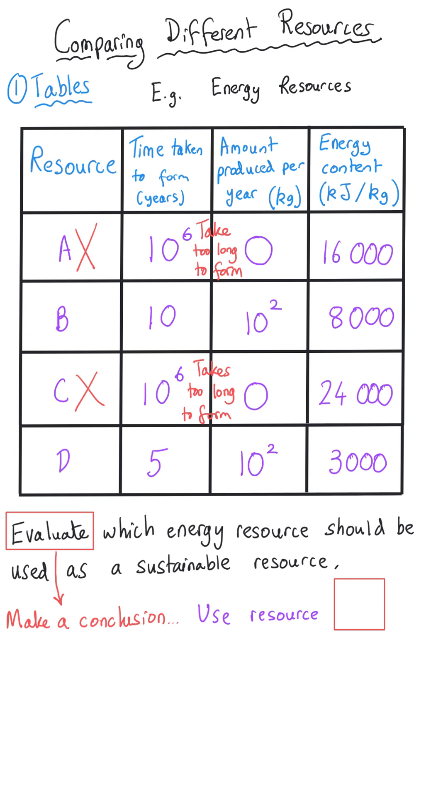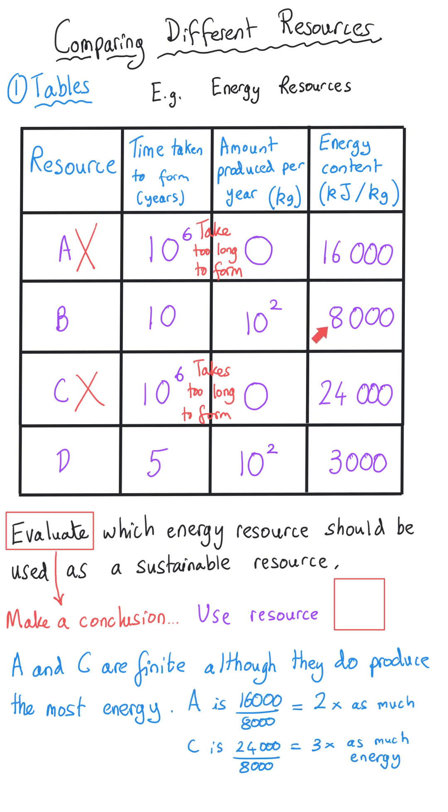But they do produce a lot of energy. For instance resource A produces twice as much energy as resource B and resource C is three times as much.